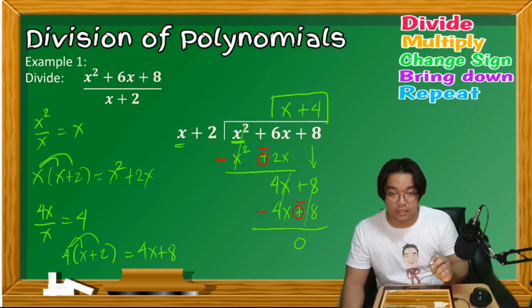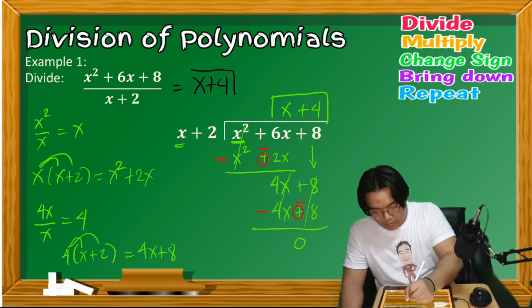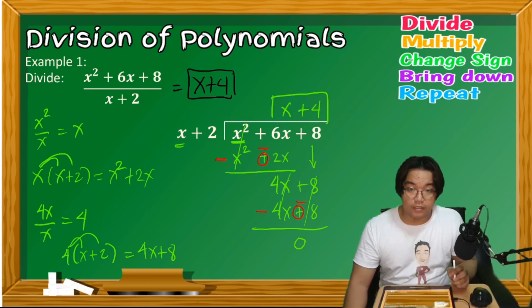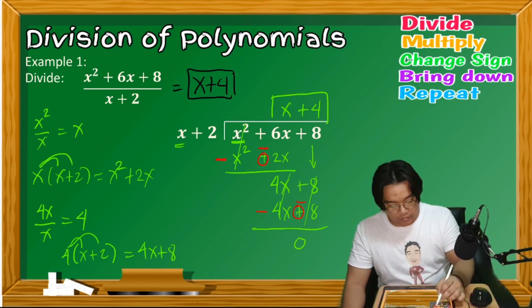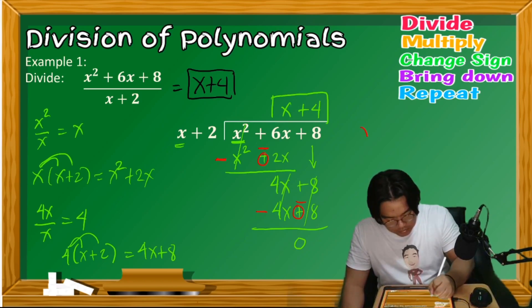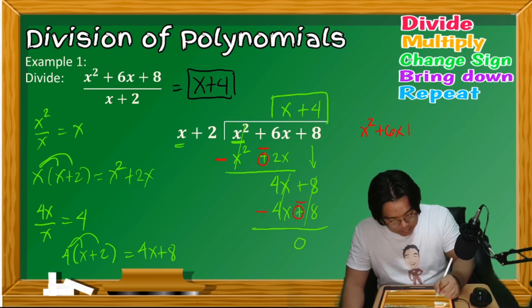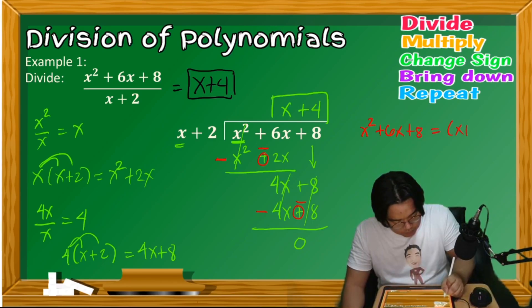Therefore, x² + 6x + 8 divided by x + 2 equals x + 4. This also implies the dividend can be written as a product of the quotient and the divisor: x² + 6x + 8 = (x + 2)(x + 4).